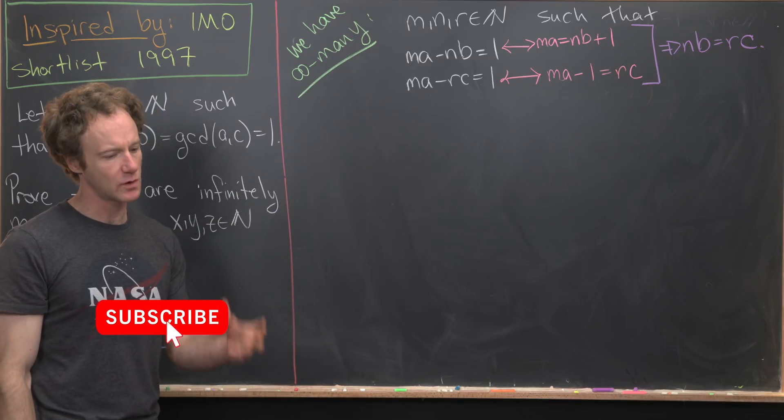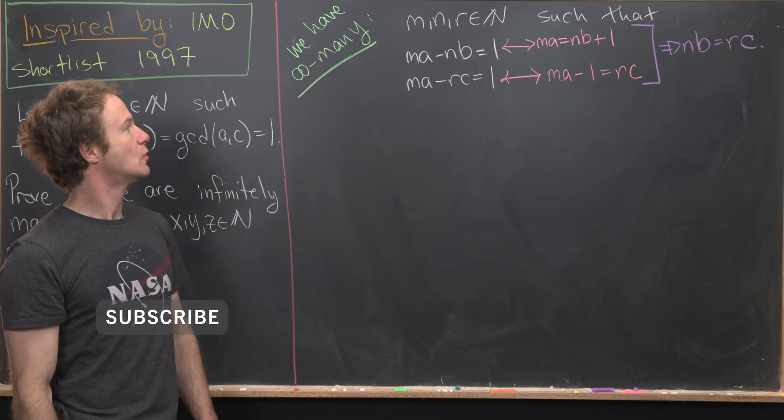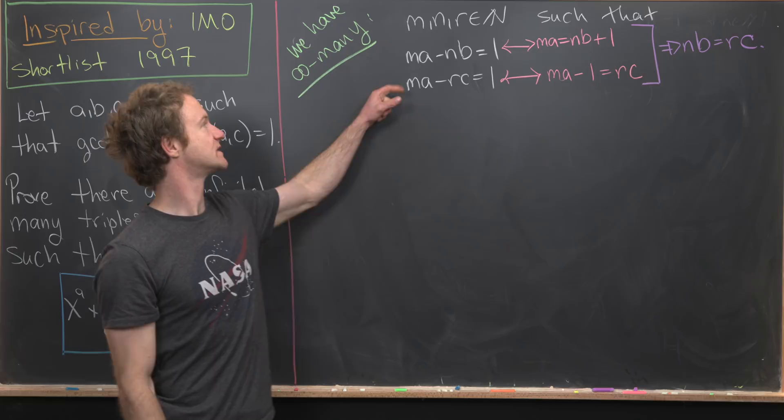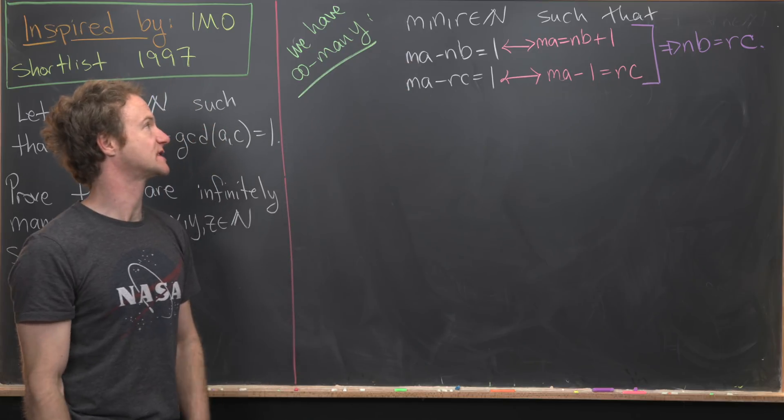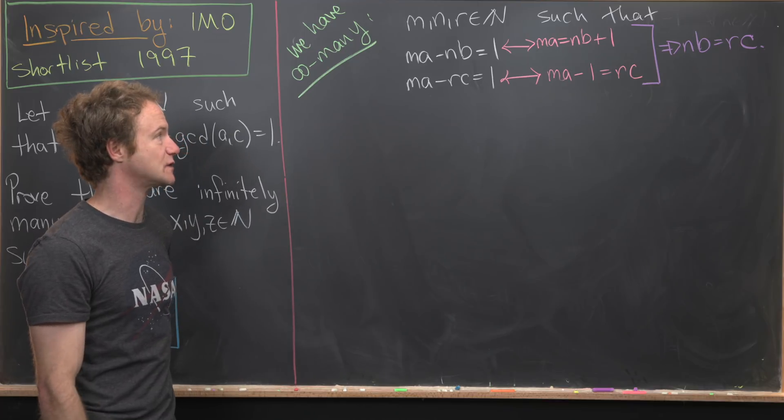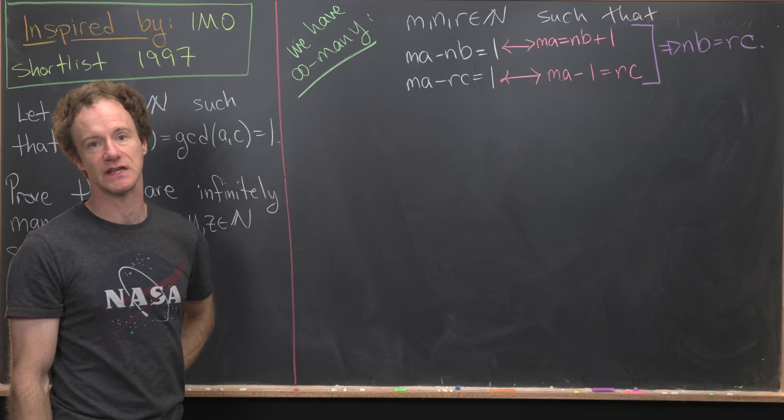So on the last board using Bezout's lemma, we constructed an infinite family of solutions to these equations. So we've got infinitely many triples M, N, R satisfying MA minus NB equals 1, and MA minus RC equals 1.